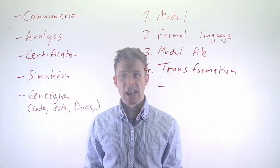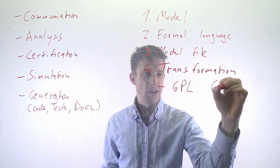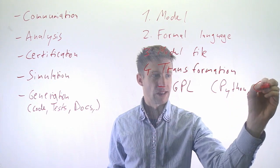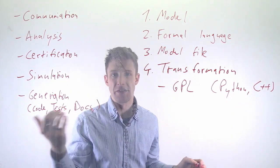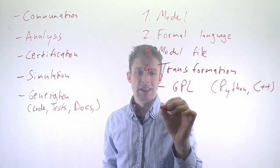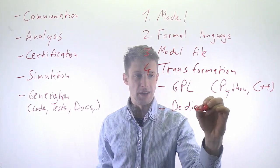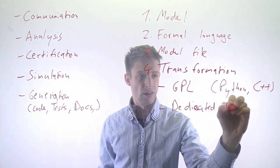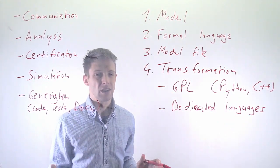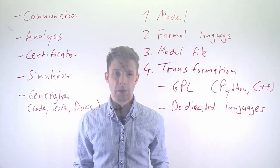The transformations can generally be in a general purpose language. So we can write this, for example, in Python or C++. We can just write a program that reads in the XML file and because we know that it is UML, we can parse it in a certain way. But there are dedicated transformation languages as well that make this a bit easier. So these are most likely languages you have not heard of yet because they're not that common, but it's specific languages that can be used exactly for this purpose.